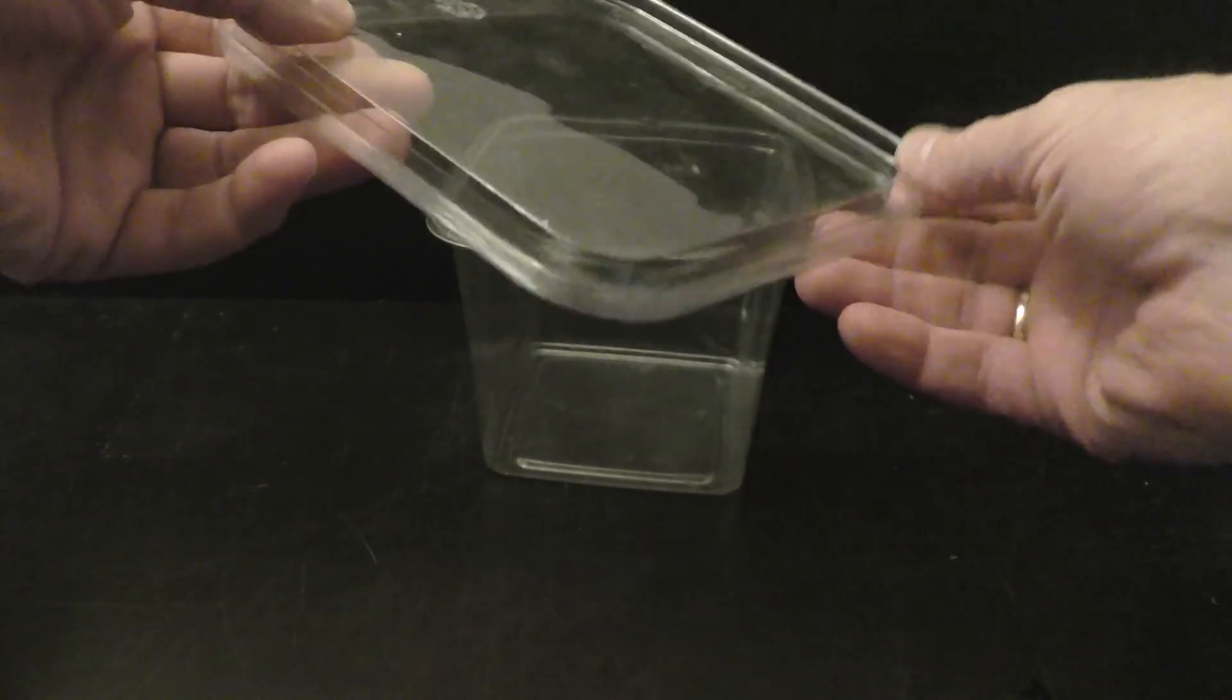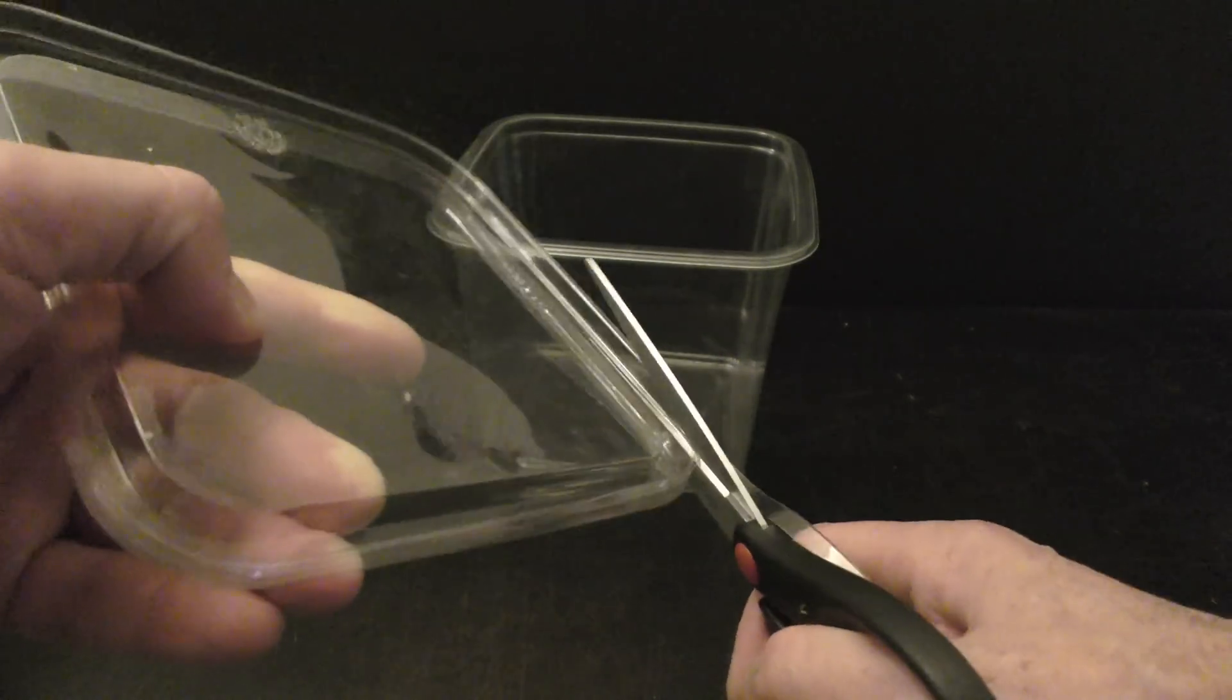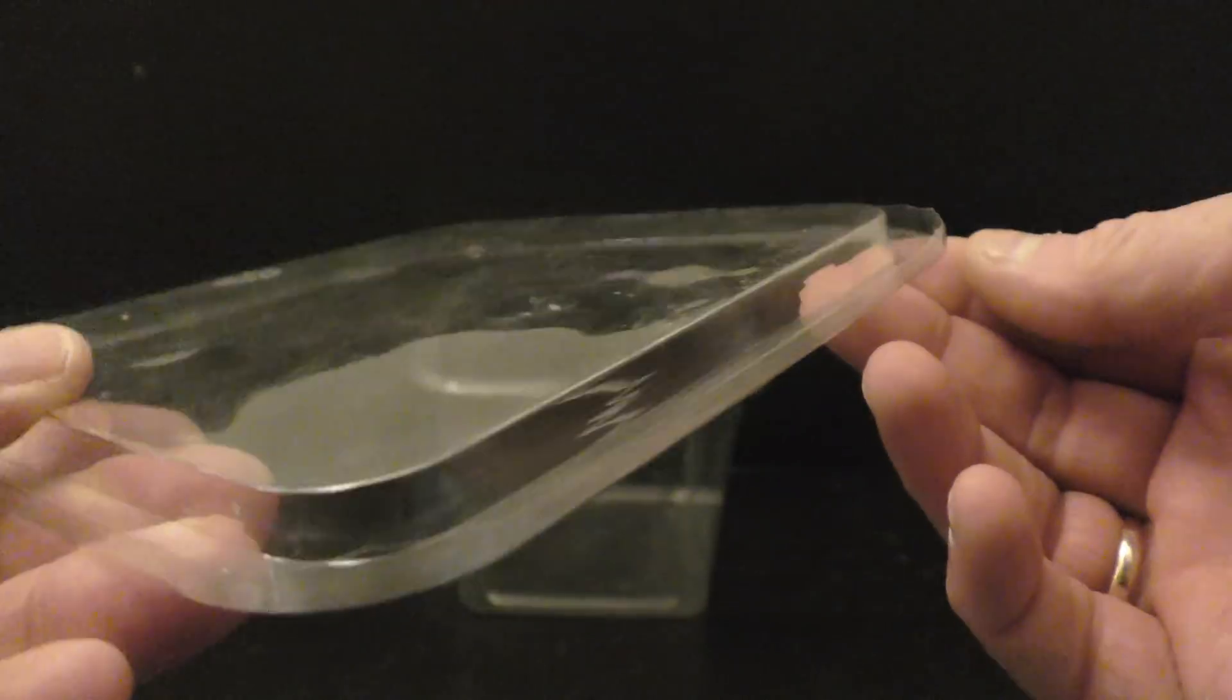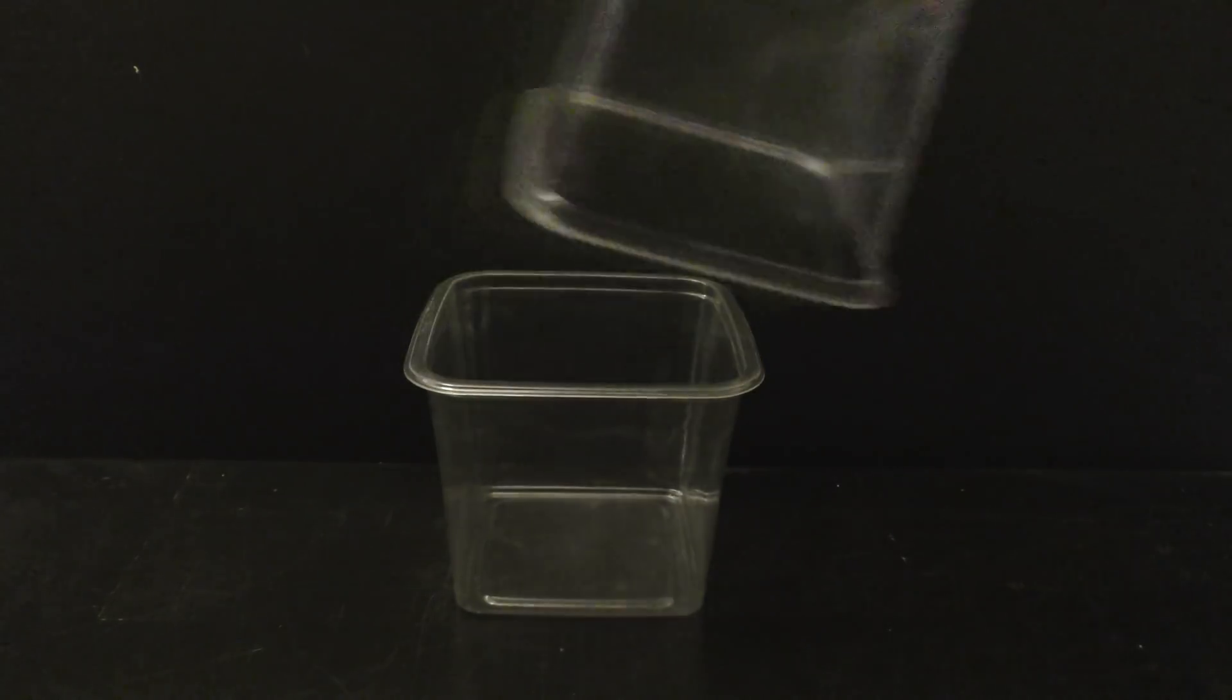I trim off the rim of the cover to make it easier to take the cover on and off the box. Use another box flipped upside down as a cover for the first box.